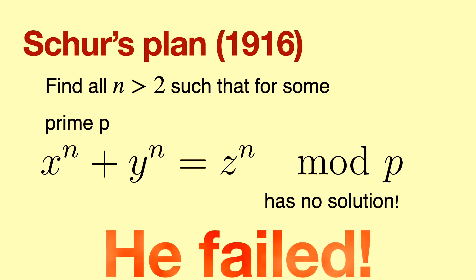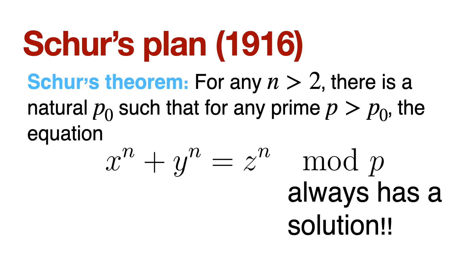Schur's plan utterly failed. What do I mean by utterly failed? Well, essentially, Schur couldn't even find a single natural number n where this will hold. So here is Schur's theorem. What Schur proved is that for any n bigger than two, there is always a p0 such that all primes bigger than p0, you have a solution for this equation. But this is crazy, right? Because now we start appreciating Fermat's Last Theorem even more, because Fermat's Last Theorem is saying there are no integers x power n plus y power n plus z power n.